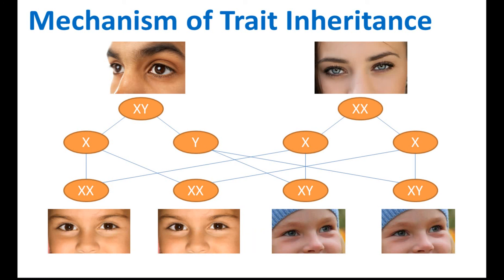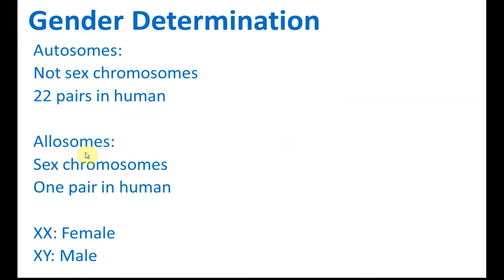So this is how the gender or sex is determined — it's determined by the sex chromosomes, which we call the allosomes. The sex chromosomes are called the allosomes, and these are the chromosomes that determine the sex or gender of an organism.